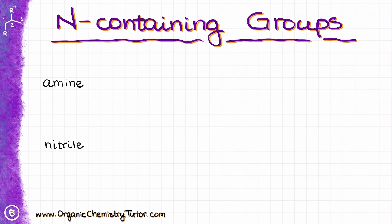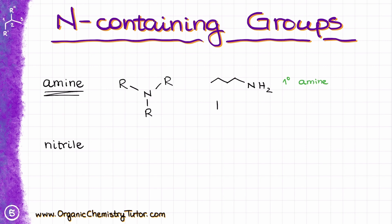Another group of organic molecules you will encounter contains nitrogens. Nitrogen-containing functional groups are mostly composed of one big family: amines. Amine is a functional group where we have nitrogen connected to one or multiple carbon-containing groups. We can have a primary amine where nitrogen is connected to just one alkyl group, a secondary amine where nitrogen is connected to two alkyl groups, and a tertiary amine where nitrogen is connected to three different groups.